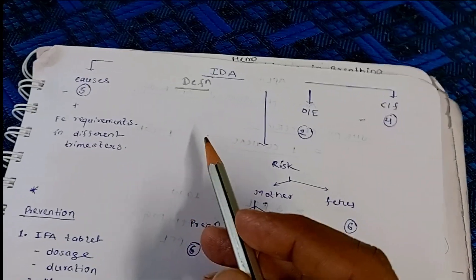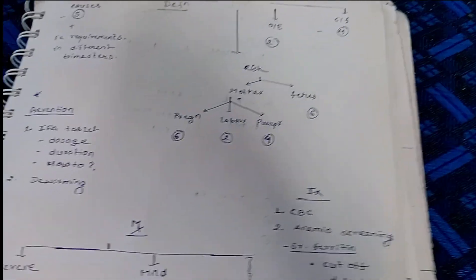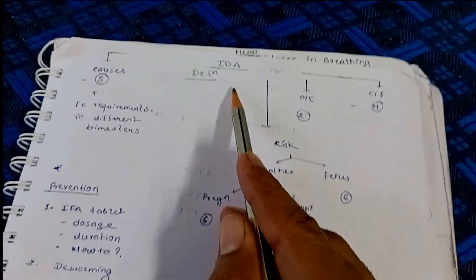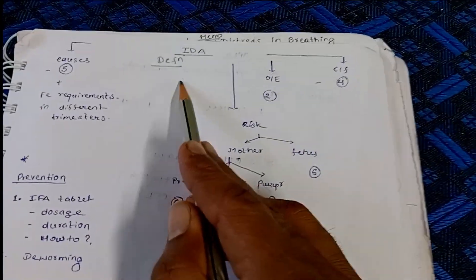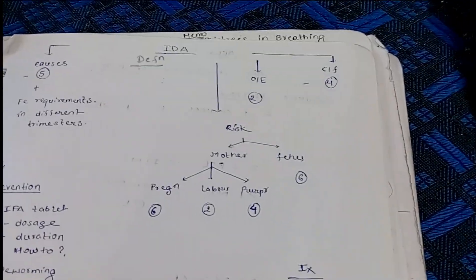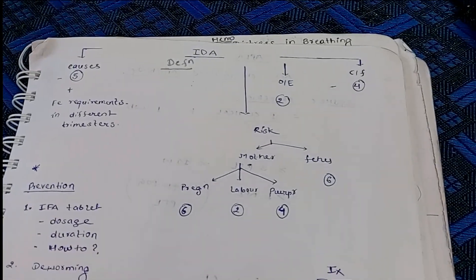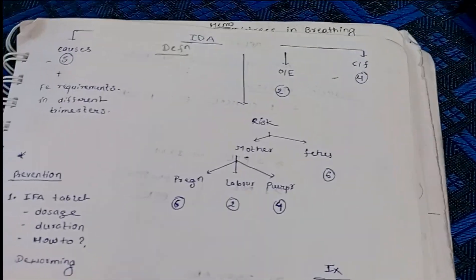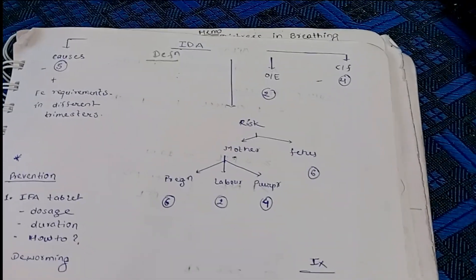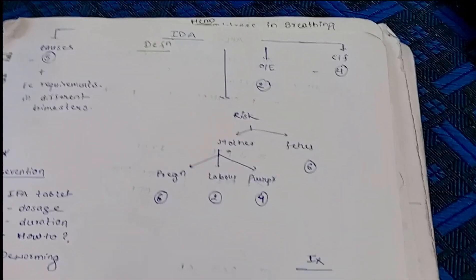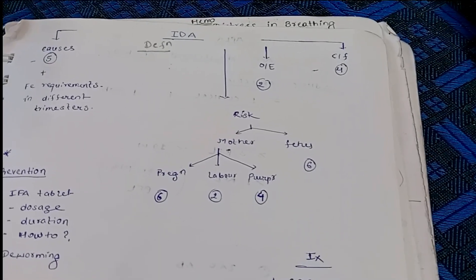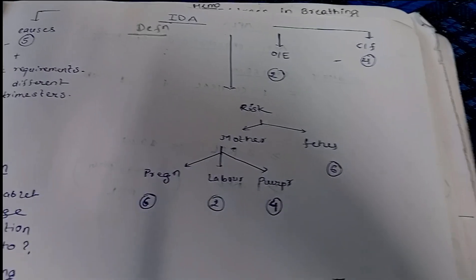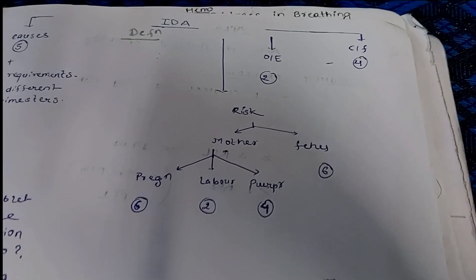This is how the recall chart is prepared — write the points like first the definition: less than 11 gram or less than 33% hematocrit. Then we talk about the causes. Iron deficiency anemia in pregnancy has five causes. The first is increased demand during pregnancy — overall, a pregnant female requires 1000 milligram of iron.